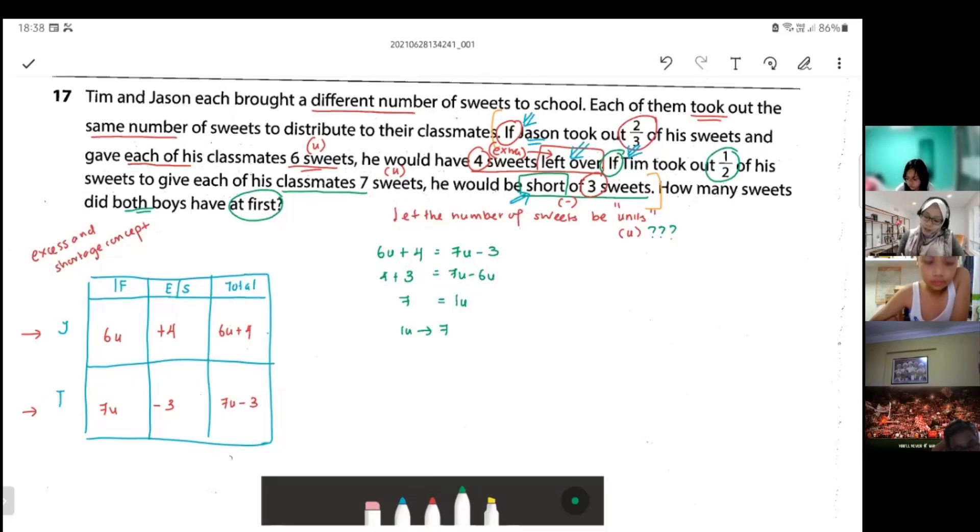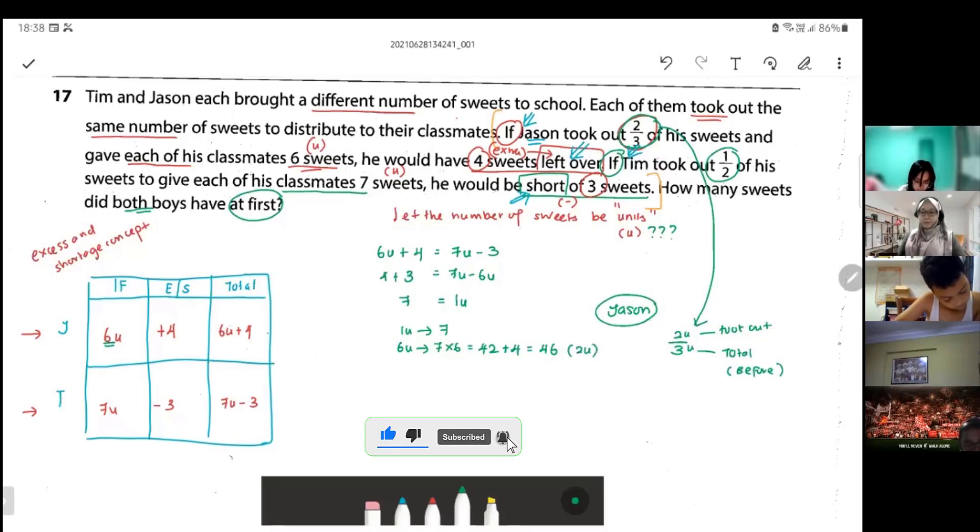Now I have this. Let's do Jason first. Jason is six unit, so six unit is seven times six equals to 42. Then don't forget to plus back the four because he got extra equals to 46. And this Jason is the two-thirds. Let's bring it down, two-thirds. What happened to Jason? Jason took out two units out of his total three units of sweets. This is how it will be. Which means this 46 is actually my two units for Jason.